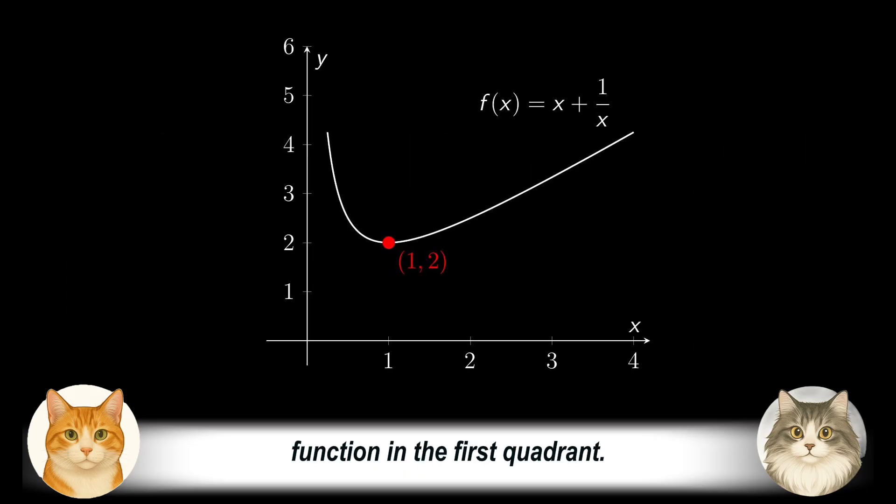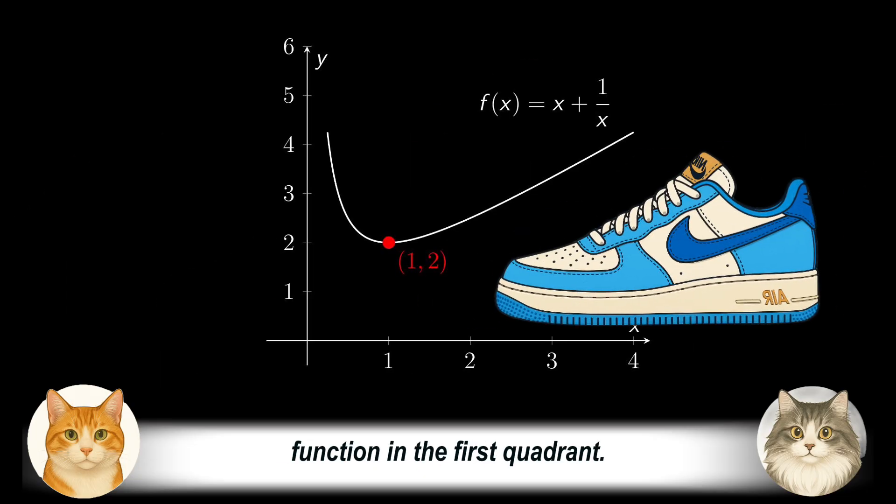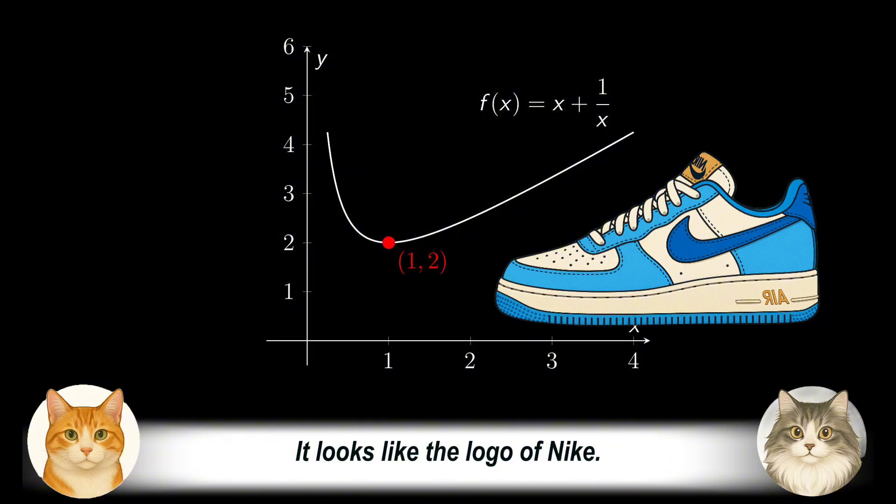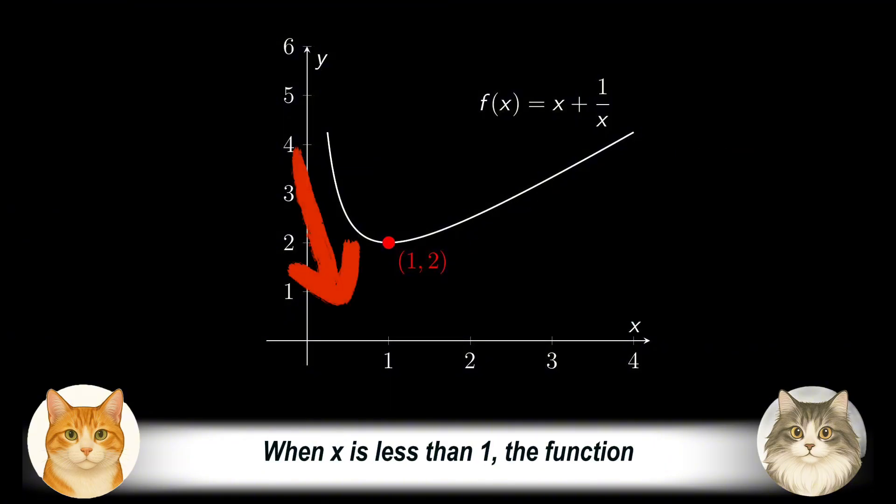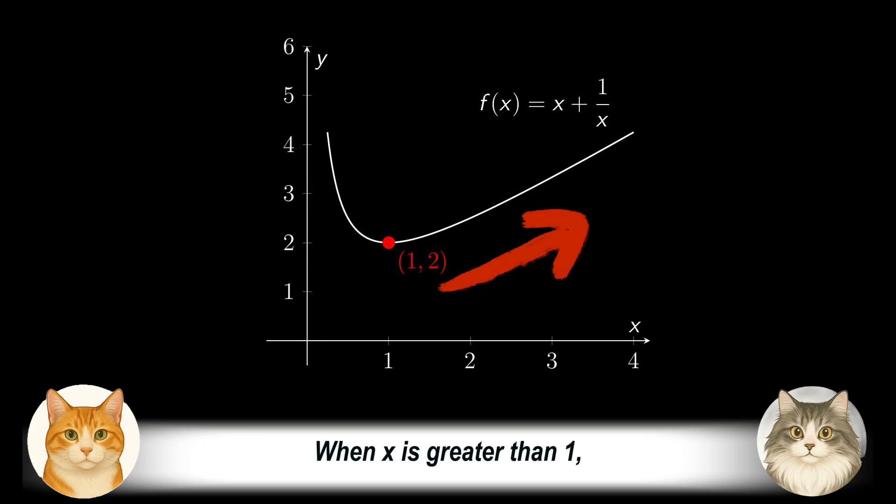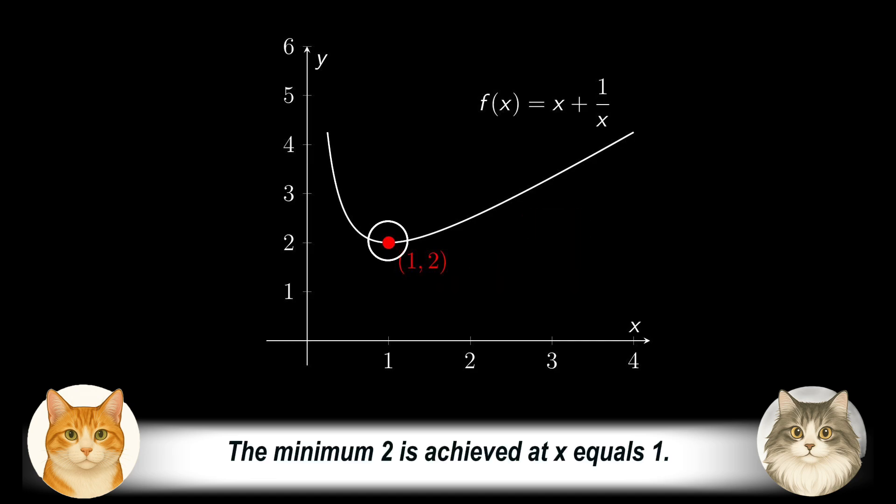Recall the graph of the Joukowsky function in the first quadrant. It looks like the logo of Nike. When x is less than 1, the function is strictly decreasing, and it tends to infinity as x approaches 0. When x is greater than 1, the function is strictly increasing, and it tends to infinity as x tends to infinity. The minimum 2 is achieved at x equals 1.